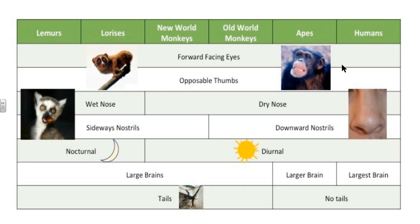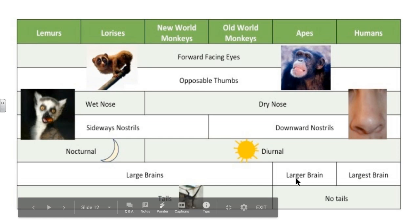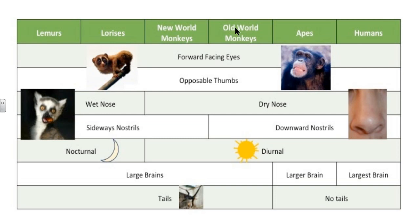The apes have larger brains than the lemurs, lorises, and other monkeys, and humans of course have the largest brain. The lemurs and lorises are more active at night, while new world monkeys, old world monkeys, apes, and humans are more active during the day. The old world monkeys, apes, and humans have downward nostrils, and from the monkeys onward they pretty much all have a dry nose. Nearly all primates have forward-facing eyes, and all but a couple of exceptions have opposable thumbs.